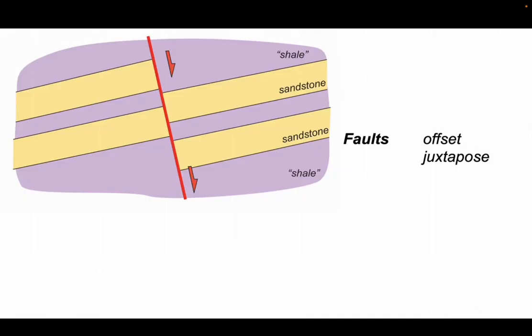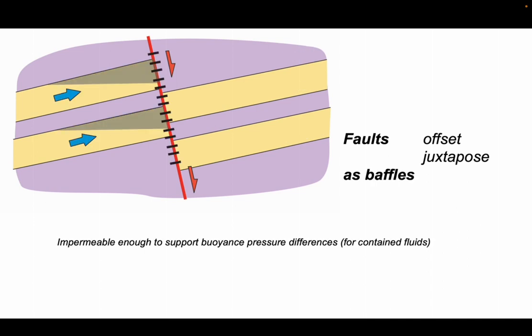Faults are fundamental structures in sedimentary basins. They are important because they can offset porous high permeability layers such as sandstones and juxtapose them against low permeability tight rocks such as shales. Faults can act as baffles where they are impermeable enough to support the buoyancy pressure differences for the fluids contained in the porous high permeability layers.